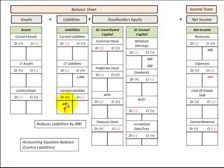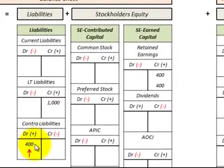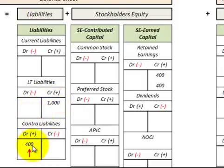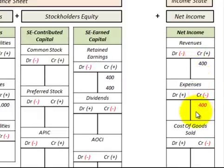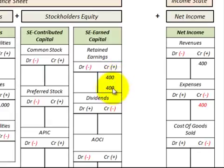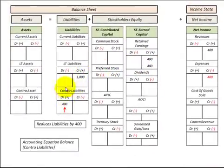Let's look at a contra liability and its effect on the accounting equation. Say we had an increase in contra liabilities of $400 — it's a debit amount against the credit balance of the liability account of $1,000, so it decreases the liability account by $400. Those contra liabilities get charged off to revenues or expenses — in this case a credit to revenues or expenses for $400. At the end of the period they get transferred over to retained earnings as a credit of $400. So retained earnings goes up by $400 and liabilities go down by $400 — these changes cancel each other out and the accounting equation stays in balance.